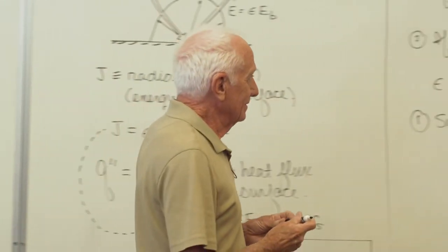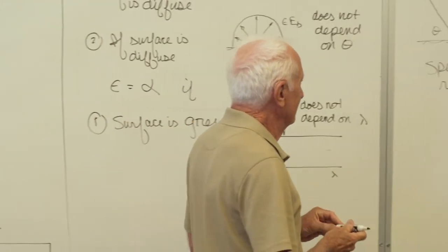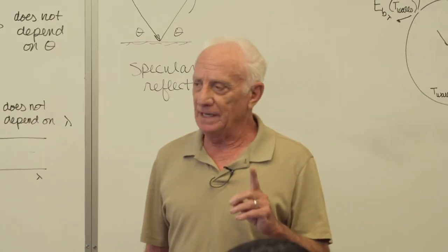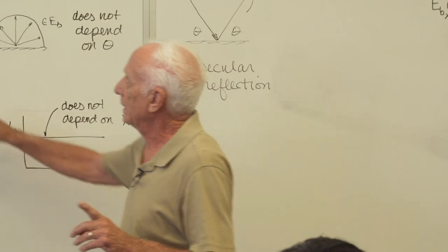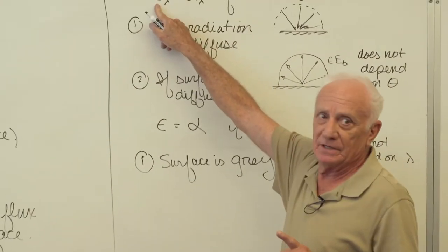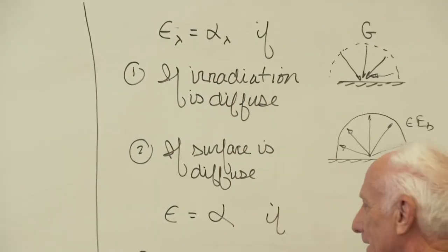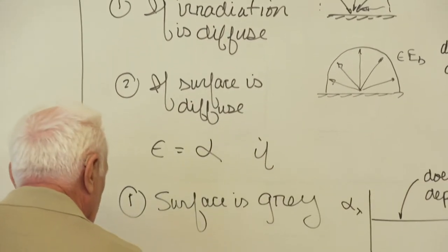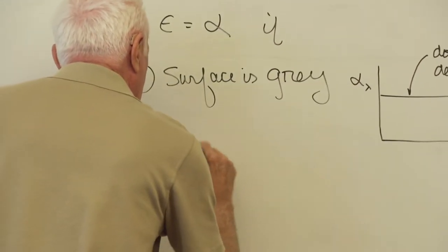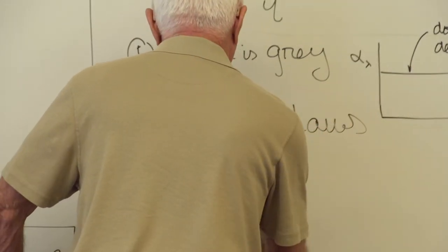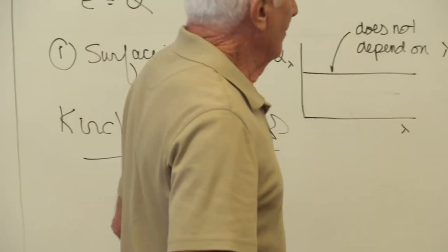So spectral means at that wavelength? Spectral, yes it does, exactly. It means it's a function of wavelength. This is emissivity as a function of wavelength or at one wavelength. These laws are Kirchhoff's laws.